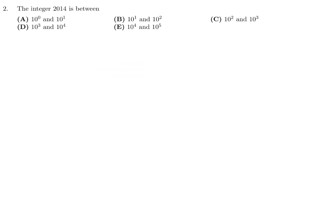Question 2: The integer 2014 is between which powers of 10? It's definitely between 1,000 and 10,000. 1,000 is 10 to the power of 3, and 10,000 is 10 to the power of 4. So looking at the answer choices, that would be D.